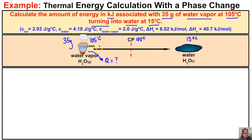This is going to be a four-step problem. In step one, we figure out how much thermal energy the water vapor releases as it goes from 105 to its condensation point of 100 degrees Celsius. In step two, we calculate the heat of vaporization — the energy needed to turn the water vapor back into water. In step three, we figure out how much thermal energy the water releases going from 100 to 15 degrees Celsius. Then we add them all up for our final answer.